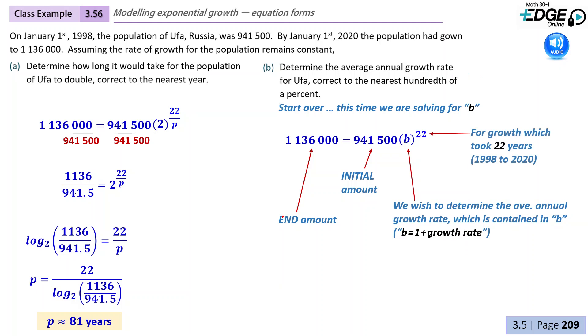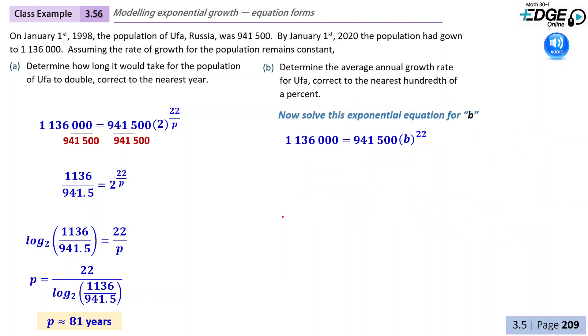And again, 22 years has gone by. You can also think about in this case that our P-value would be 1 because it's our annual growth rate, so every year. And then we're solving for the B-value for that. So we'll divide both sides to simplify the equation. And then we can take the 22nd root of both sides to solve for B or rewrite that as a fractional exponent.